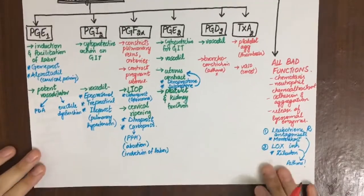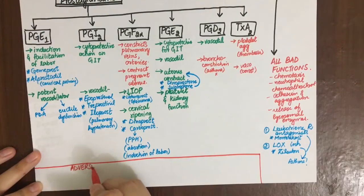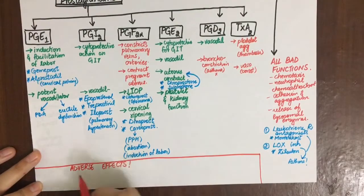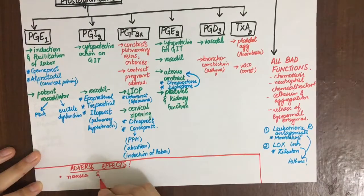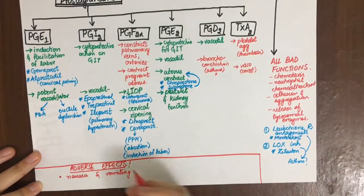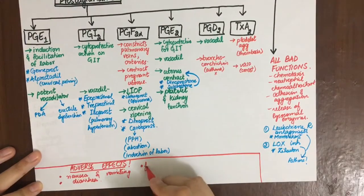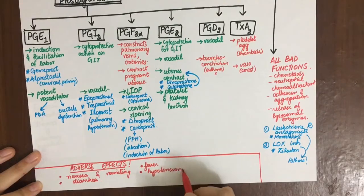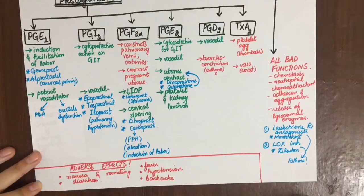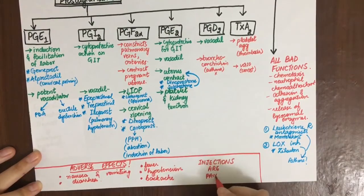Now at the end, let's see some adverse effects of prostaglandins: nausea and vomiting, fever and flushing, diarrhea due to smooth muscle contraction, hypotension due to vasodilation, backache due to uterine contractions, and injections are usually painful because these are substances which are normally released which elicit pain by stimulating nerve endings.